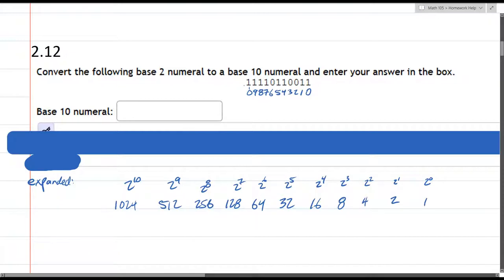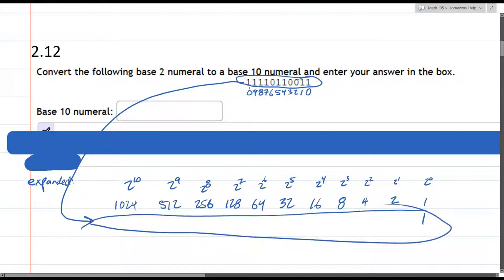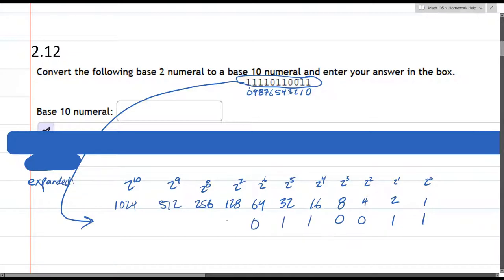Now what I'm going to do is write how many of each of these we have. Because we're in binary, we either have 0 or 1 of them. So we'll start again on the right. I'm just copying all these digits right into that space. So 1, 1, 0, 0, 1, 1, 0, and then four 1s.